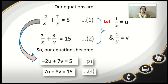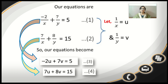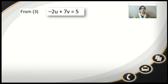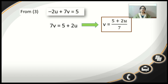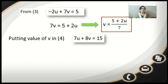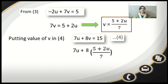Equations 3 and 4 are now linear equations in two variables, which we can solve by substitution or elimination. From equation 3 — minus 2u plus 7v equals 5 — we get 7v equals 5 plus 2u, so v equals (5 plus 2u) upon 7. Substituting this value of v into equation 4 — 7u plus 8v equals 15 — we get 7u plus 8 times (5 plus 2u upon 7) equals 15.